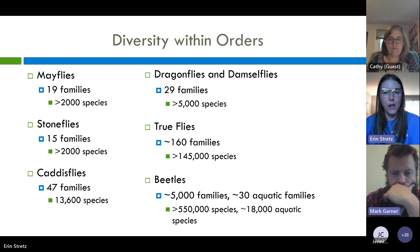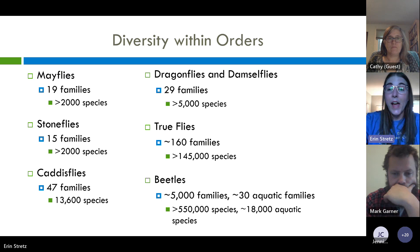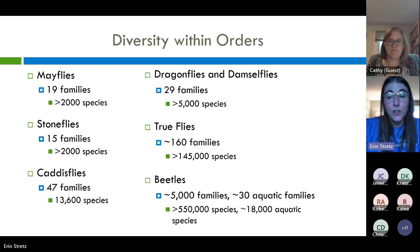You can see with the beetles we've got over 18,000 aquatic species. But for our data sheet, we only look for one family — that's the Elmidae, the riffle beetles — actually two, also water penny beetles.